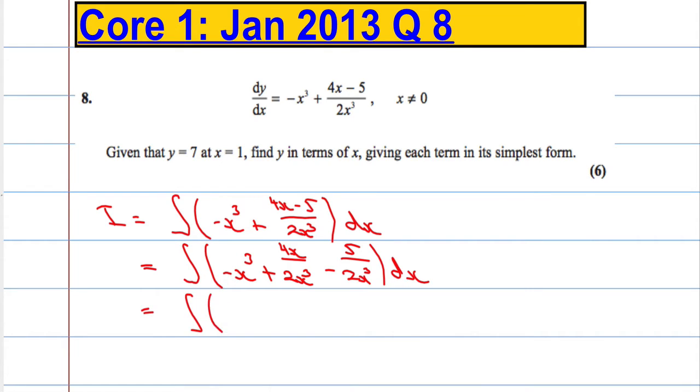And again, that's the integral, negative x cubed. And let's see if we can simplify these terms here. 2 goes into the 4 twice. And x divided by x cubed is x to the power of negative 2. I'm going to leave that as negative 5 over 2. And then x to the power of 3 underneath the line, I can bring it up above and write it as x to the power of negative 3. So I'm using the laws of indices to rewrite that. So I'm integrating this expression now with respect to x.